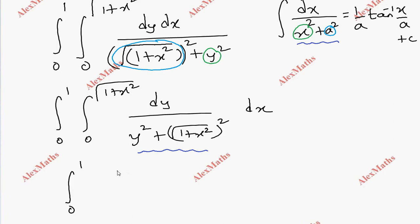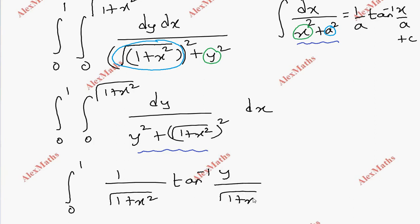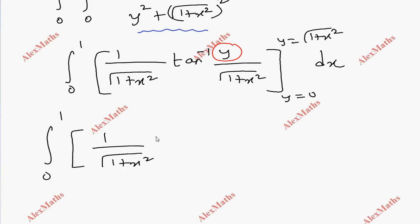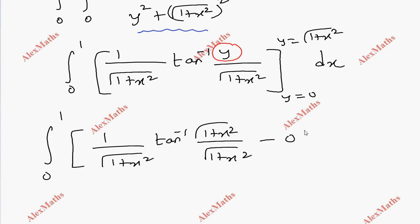So integral 0 to 1: 1 by a, where a is root of 1 plus x squared, tan inverse y by a, where a is root of 1 plus x squared. Then we substitute the limit of y from 0 to root of 1 plus x squared, dx. Substituting the upper limit: 1 by root of 1 plus x squared, tan inverse of root of 1 plus x squared divided by root of 1 plus x squared. The lower limit gives everything zero, so we are left with only one term, and at the end we have dx.